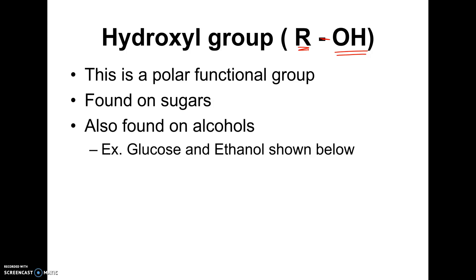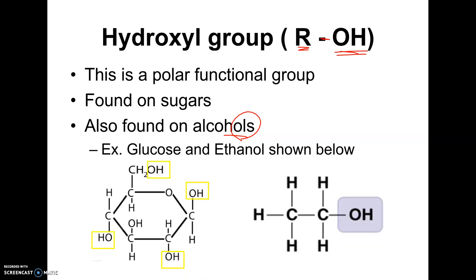It tends to be found on sugars. Another place you'll find this is on alcohols. In fact, typically things that have OH groups end in OL. So here's two examples, glucose and ethanol. So glucose, look at all the hydroxyl groups on glucose. This is why sugar dissolves well in water, because it's got a whole bunch of these hydroxyl groups stuck to it.